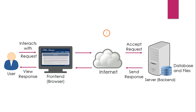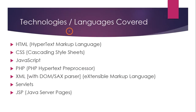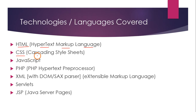Now let's look at the different technologies and languages covered in this web technologies lab series. First, you are going to learn HTML — Hypertext Markup Language. Then you are going to learn CSS, which stands for Cascading Style Sheets. CSS is used for styling web pages — presentation elements like adding colors, changing font size, font color, or font type.